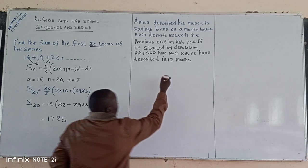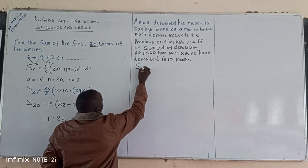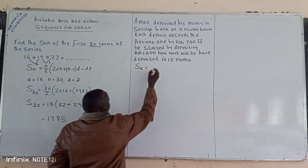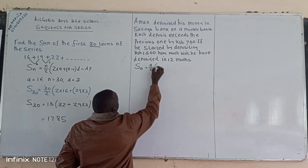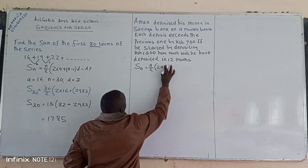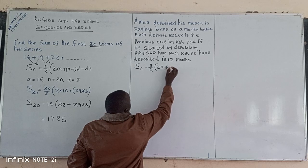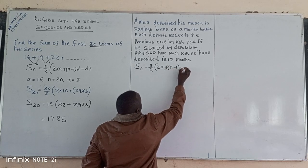By saying that, we can have this as Sn, which is equivalent to n divided by 2, then we have 2 multiplied by a, plus n minus 1, then we have times d.